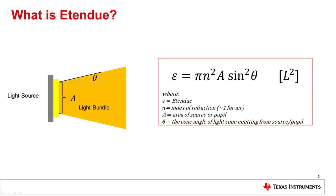As the area of a light source grows, the etendu grows. And as the solid angle grows, the etendu grows. Etendu has units of length squared.